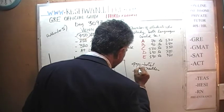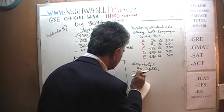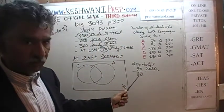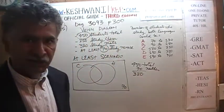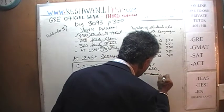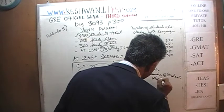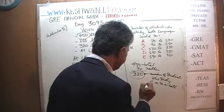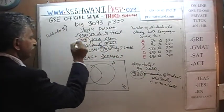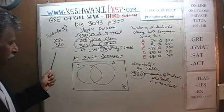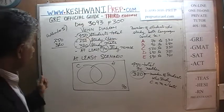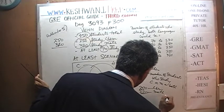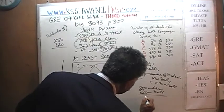Given that 70 study neither and we have 450 total students, 450 minus 70 gives us 380 — the number of students who study chemistry or math or both. But if we add up the two given figures, 250 and 320, we get 570.